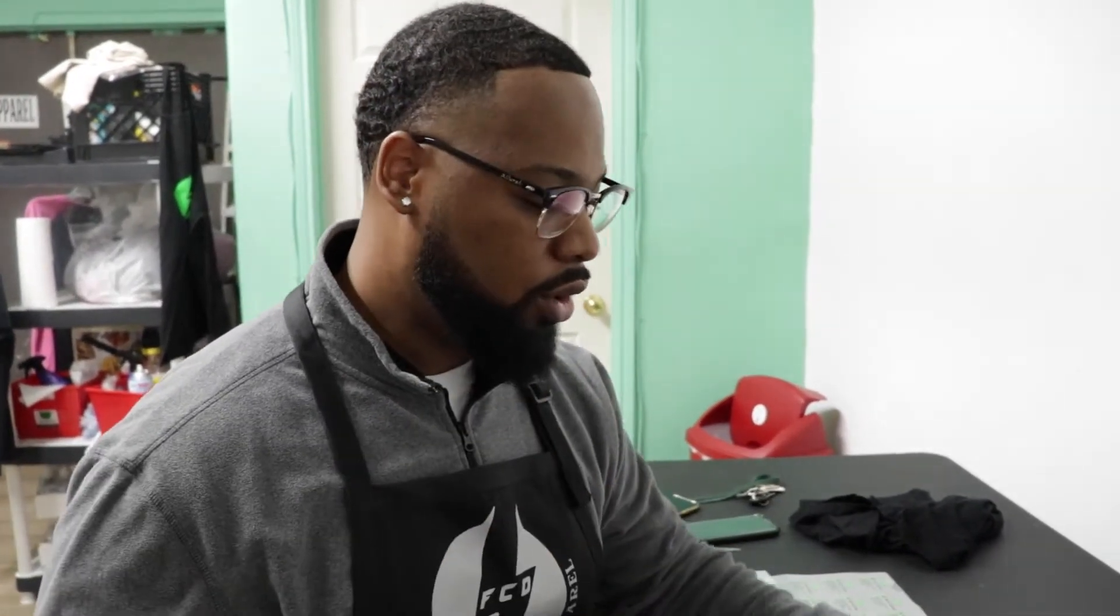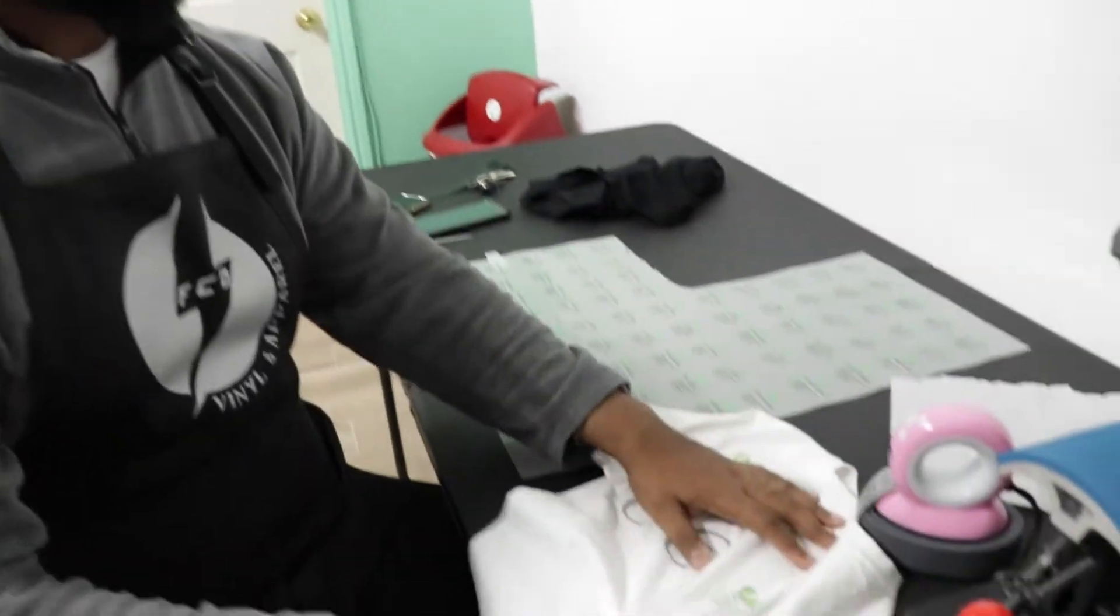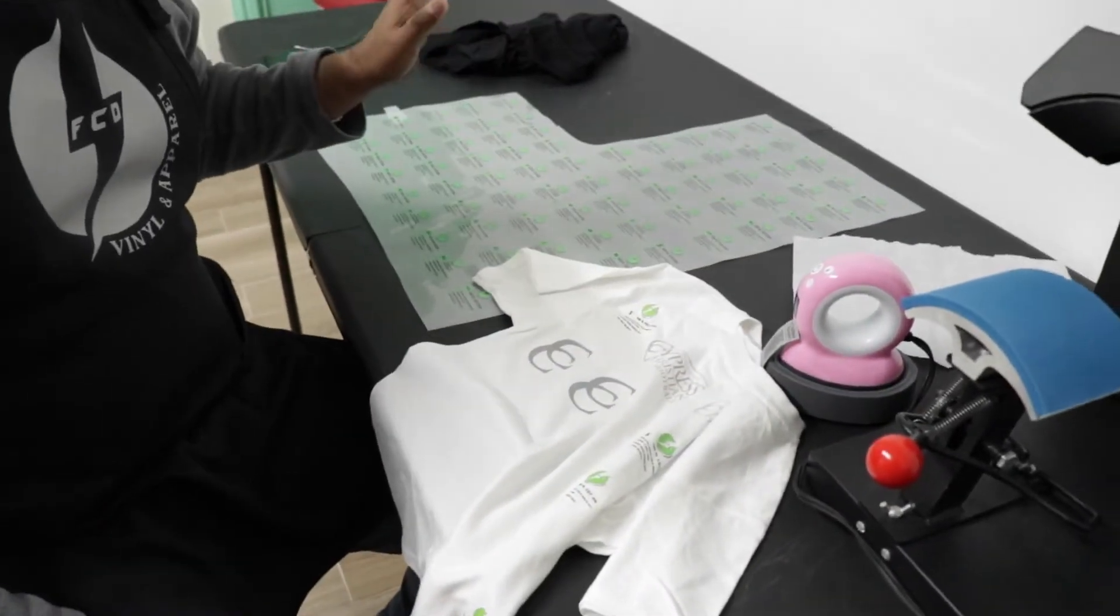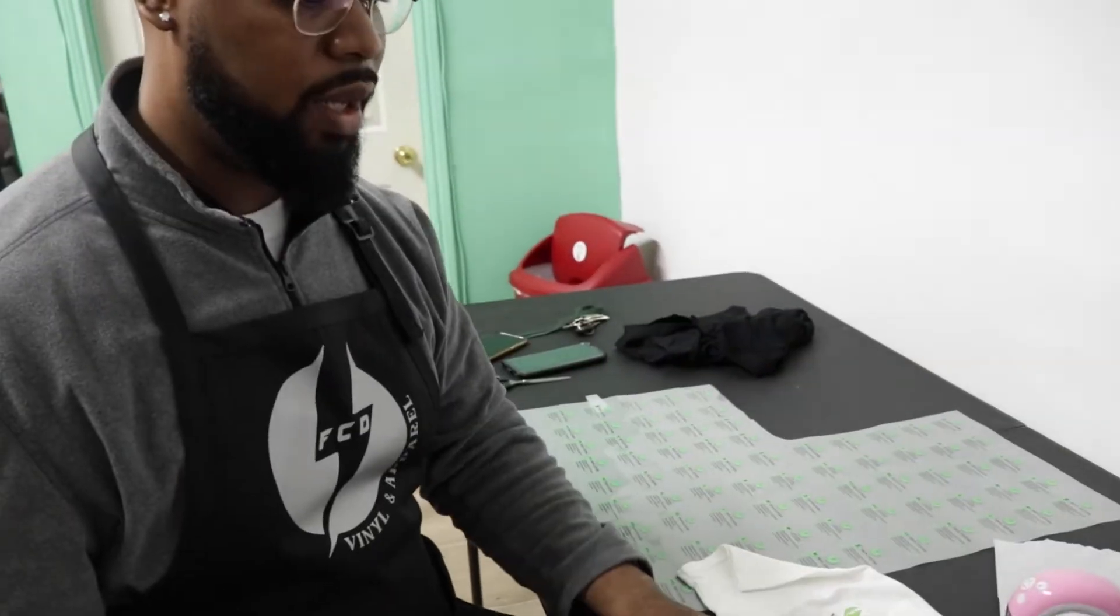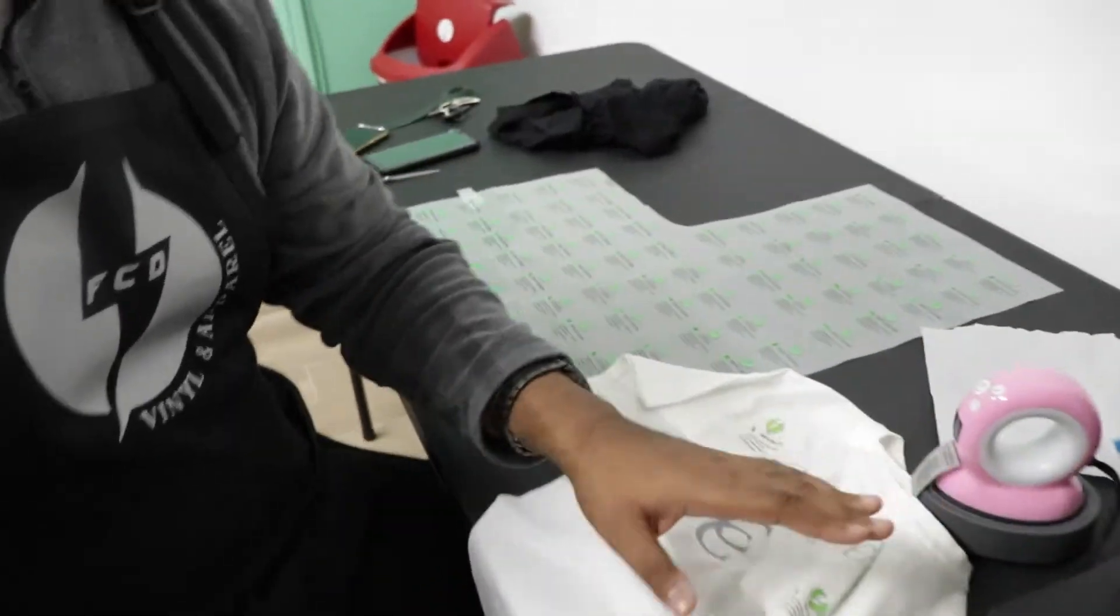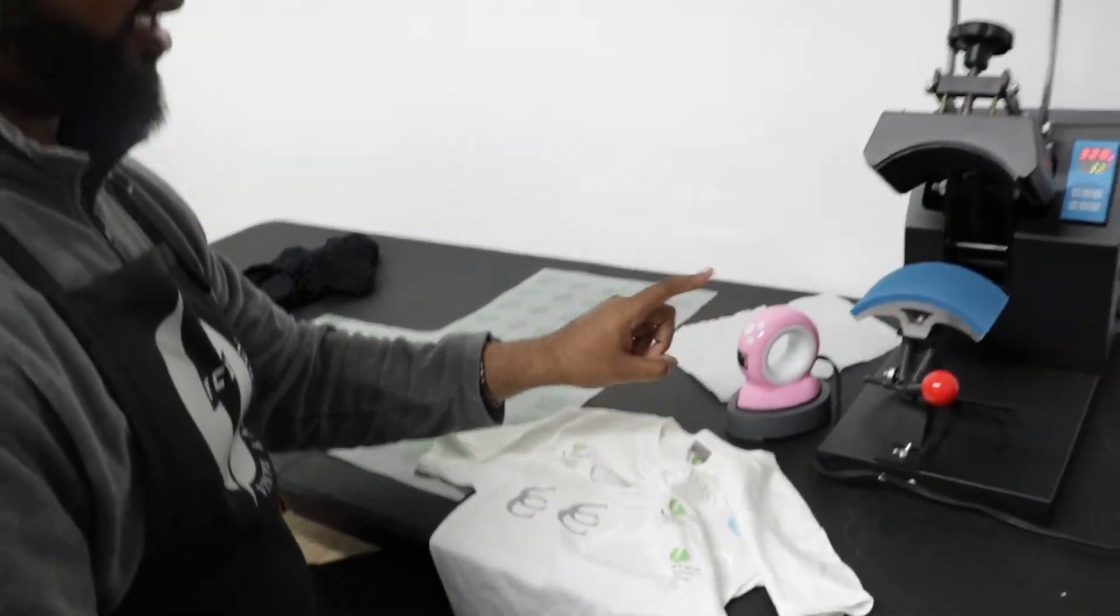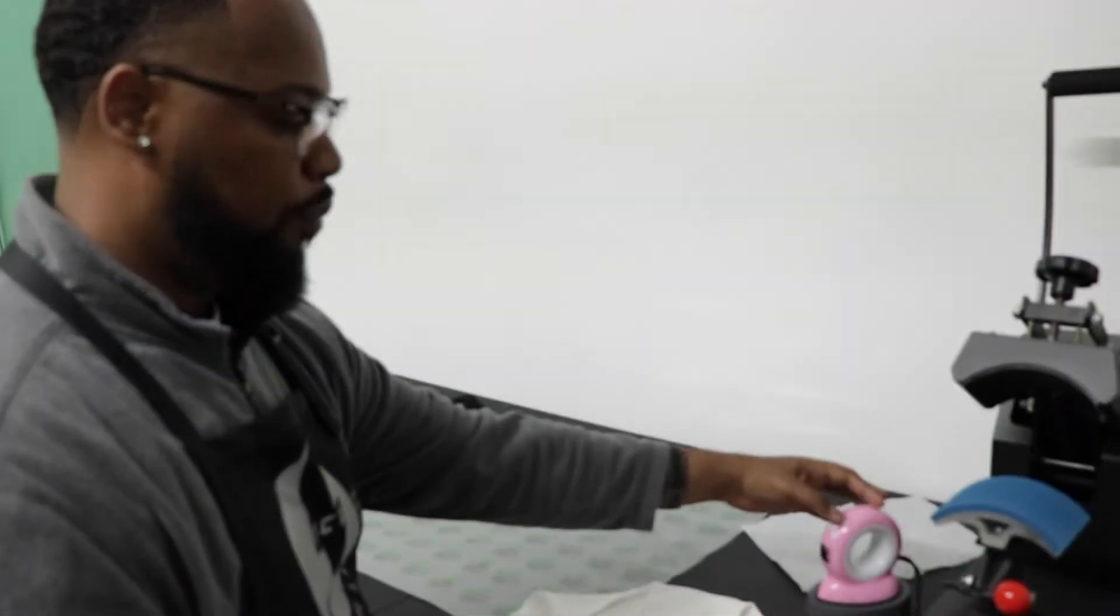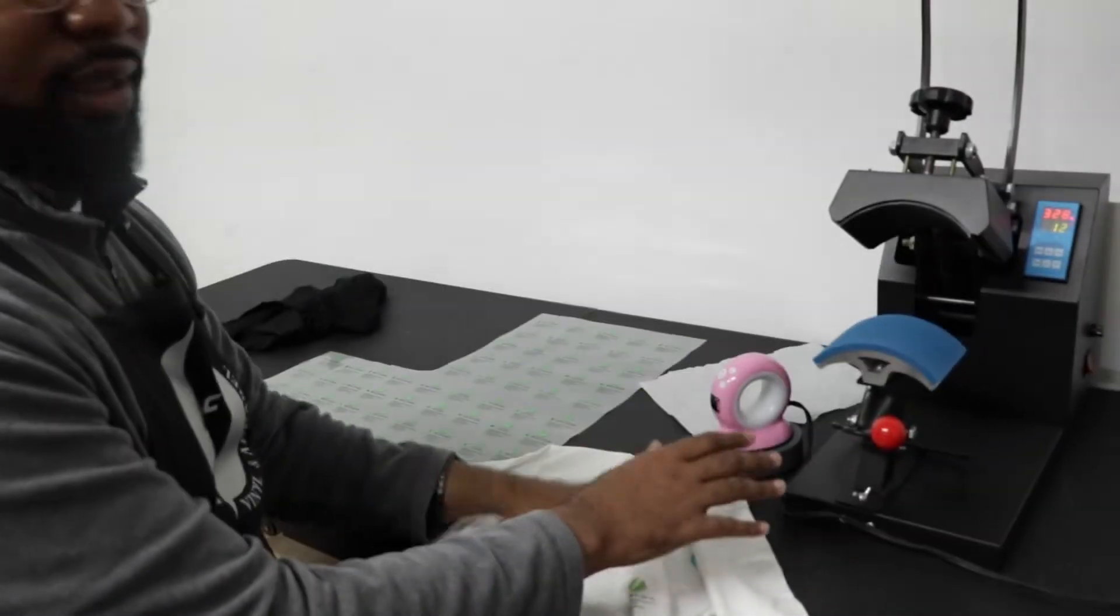These here are some examples that we did because we really wanted to master the process of how to put these on your garment. So first thing we're going to do is show you how to put the labels on your garment using a hat press and then the more difficult is using the mini press.